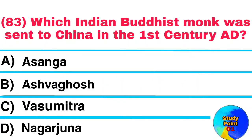Question No. 83. Which Indian Buddhist monk was sent to China in the 1st century AD? Answer: Asanga.